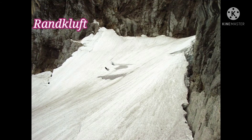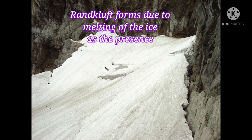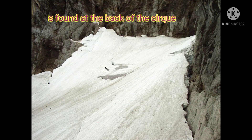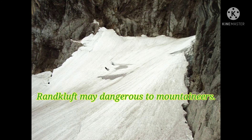A randkluft is the headwall gap between the mountain rock face and glacial ice — that is, the gap between the mountain wall and the glacier. It is formed due to melting of the ice caused by the presence of a warmer rock face, and is found at the back of the cirque. A randkluft can also be dangerous for mountaineers.